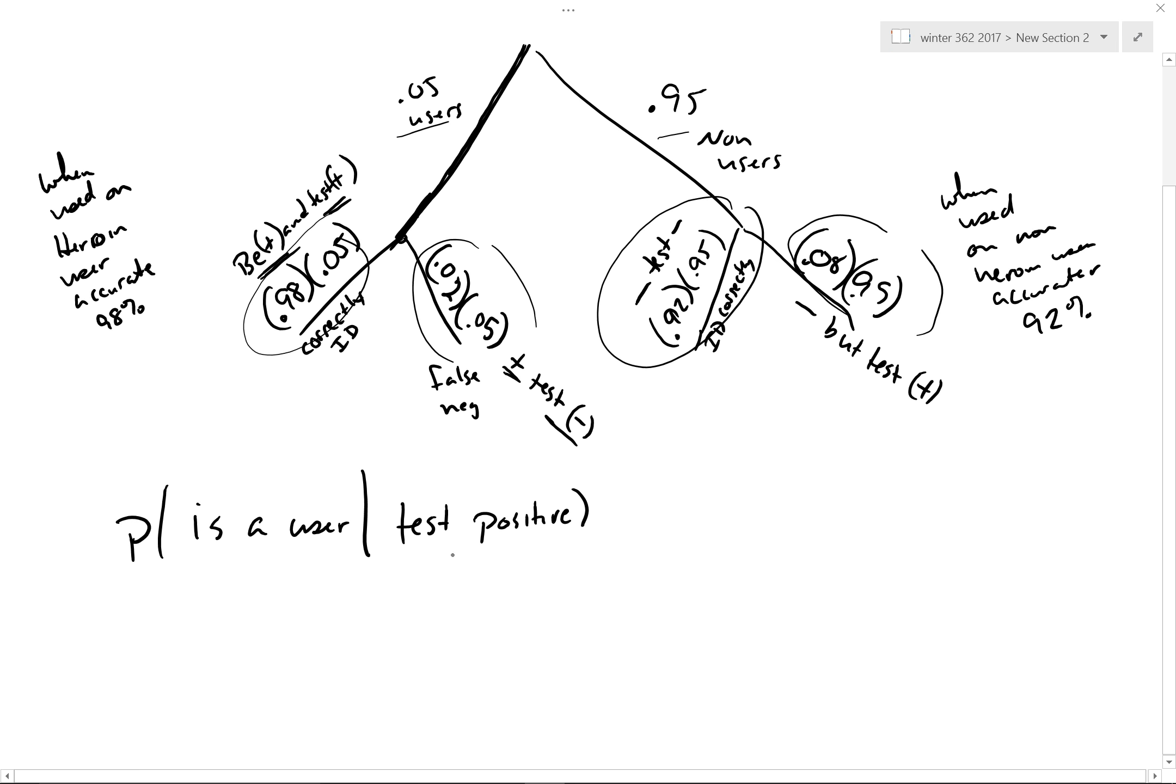So what had to happen first? Well the test positive had to happen first. Well, the test positives are 0.98 times 0.05 plus the 0.08 times the 0.95. Those are all the positive testers.